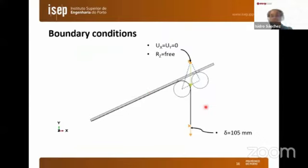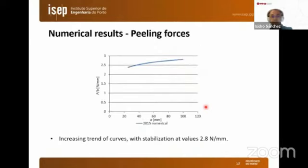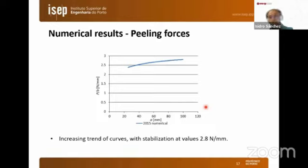The boundary conditions represent those imposed in the experimental testing, as shown in the figure. Here we have the force-displacement curve from the numerical test. This is for one particular adhesive — we did this for four adhesives in total. We can see a slight slope that can be attributed to the way the loading conditions were imposed; however, the mean value is around 2.8 Newton per millimeter.